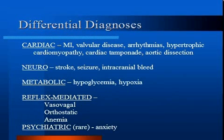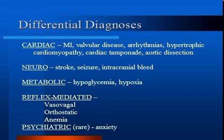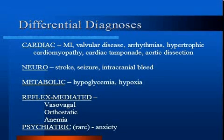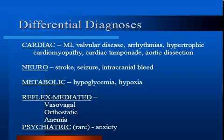A differential diagnosis can be sorted into five main groups. Cardiac abnormalities that can cause syncope include myocardial infarction, valvular disease like aortic or mitral stenosis, arrhythmias like atrial fibrillation, ventricular tachycardia and AV block, hypertrophic cardiomyopathy, cardiac tamponade, and aortic dissection.